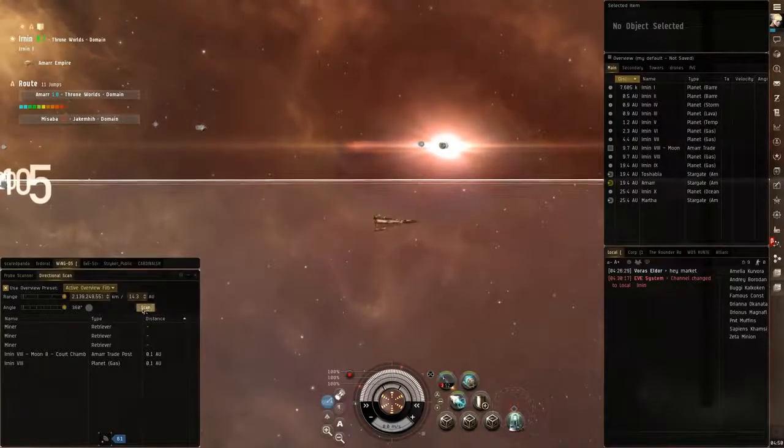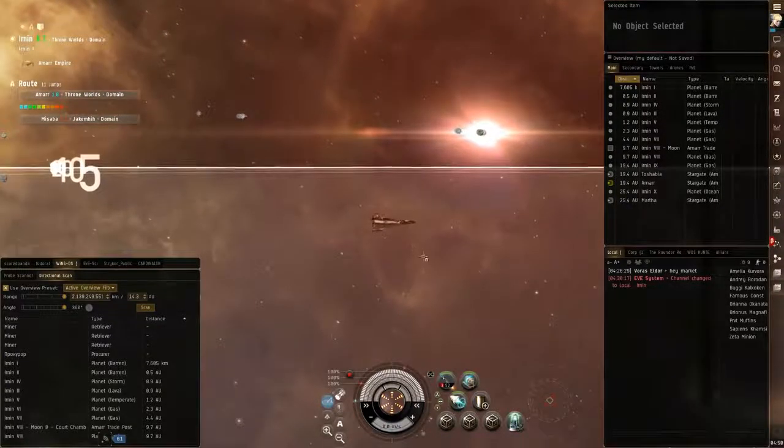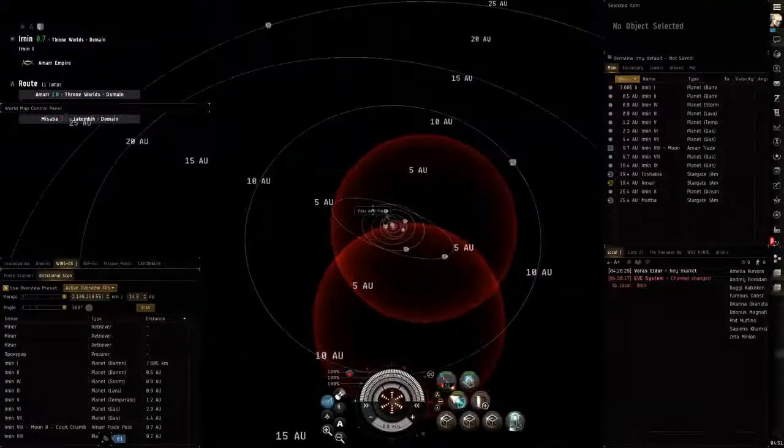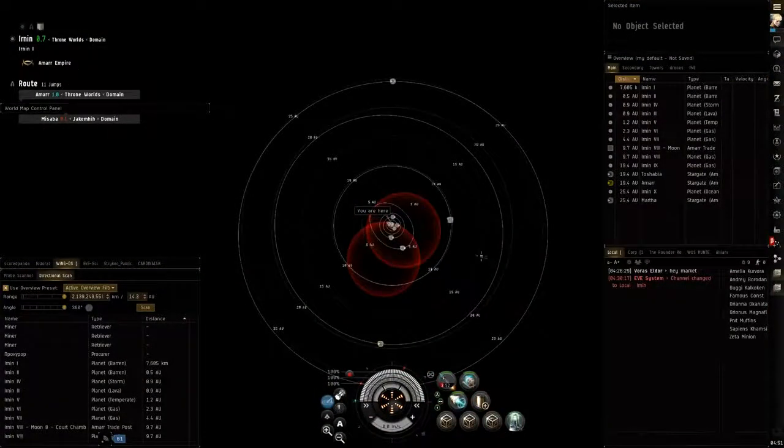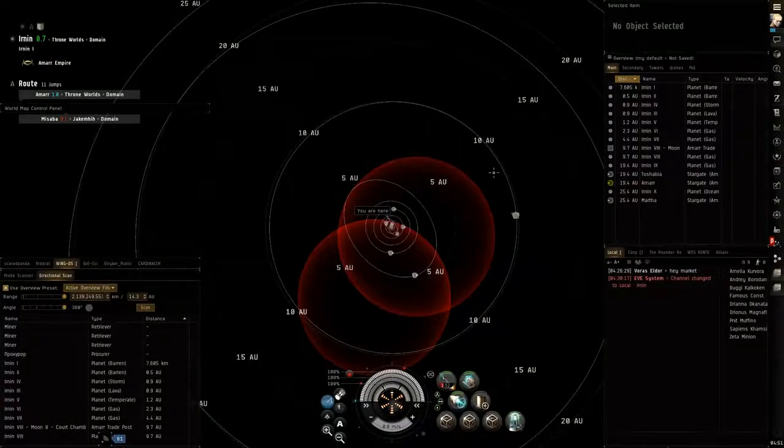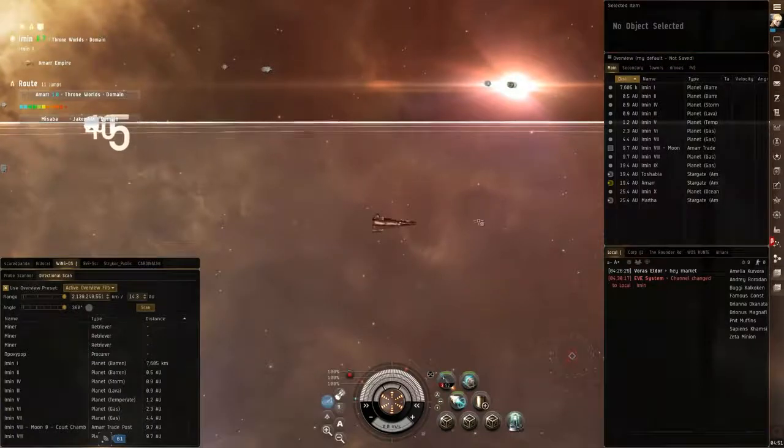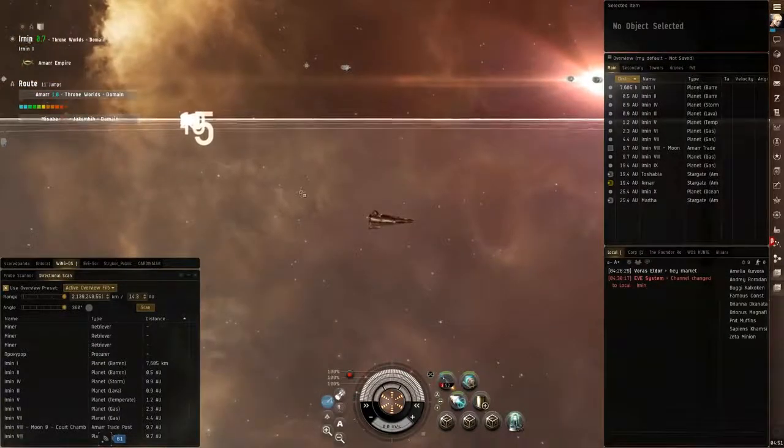So this is EVE Online, a spaceship simulation game. It's really kind of in a genre of its own. Basically, you can see I'm in this star system, and the solar systems in the game are fairly big, as you might expect. Actually, I can't see any of these ships that are in the system because they're too far away.